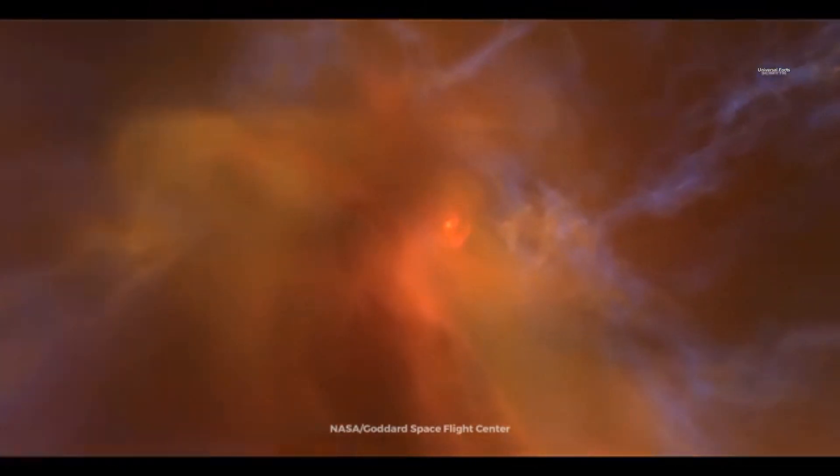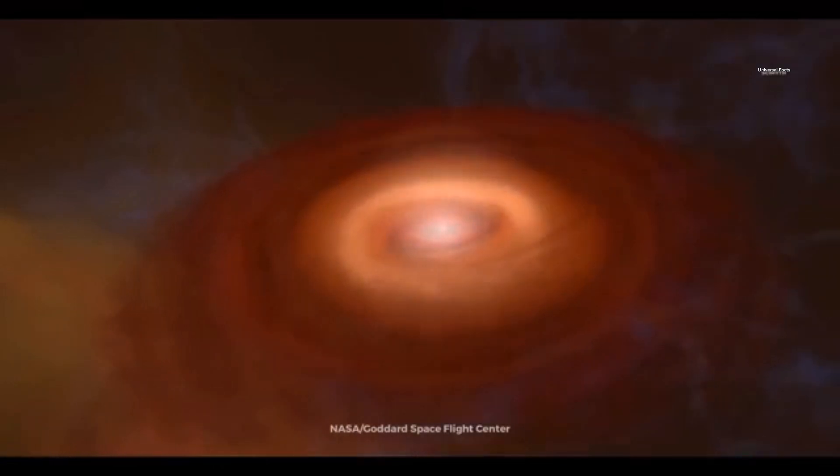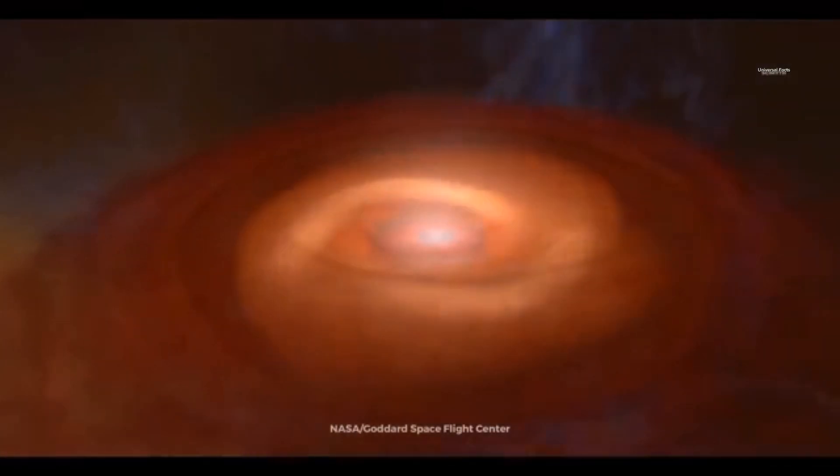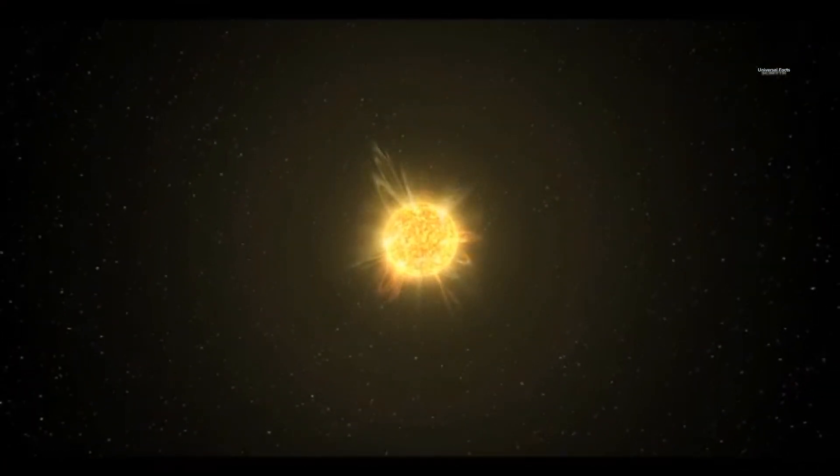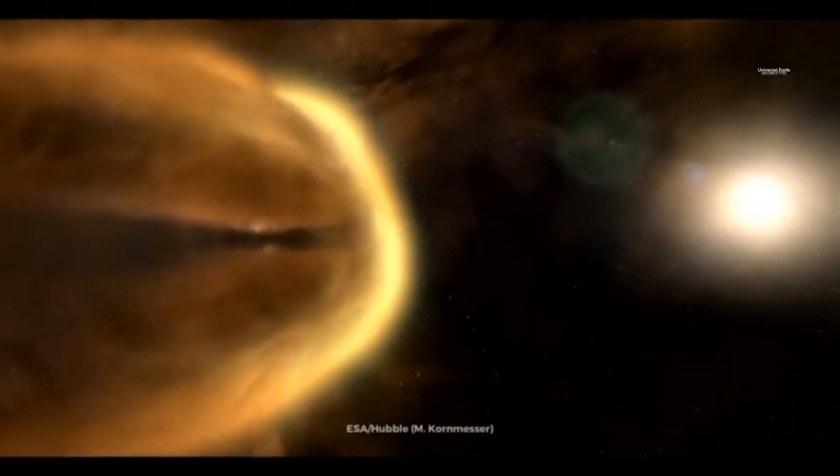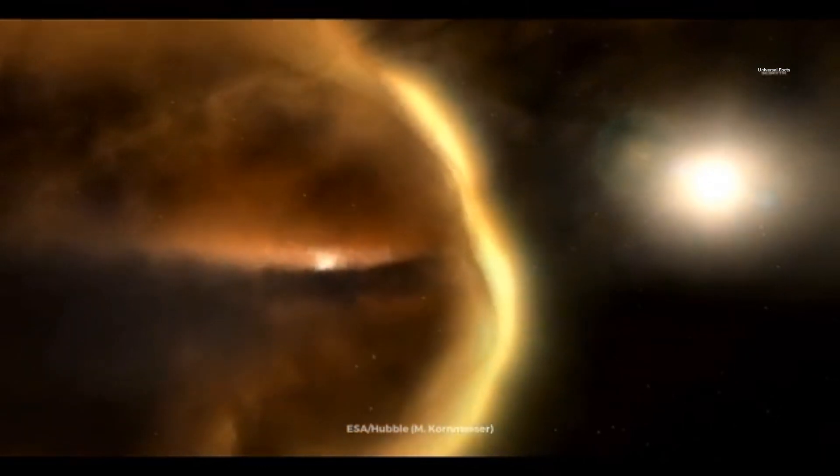Initially, these stars are simply spheres of dust and gas. Over time, they become increasingly dense and massive, leading to nuclear fusion reactions in their cores. This marks the official birth of a star. About 4.6 billion years ago, a similar process gave birth to our Sun.